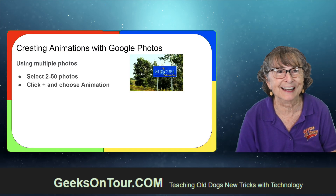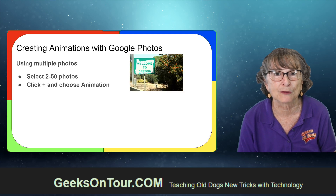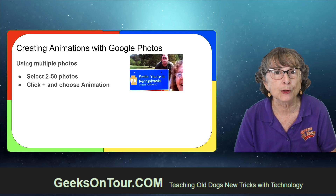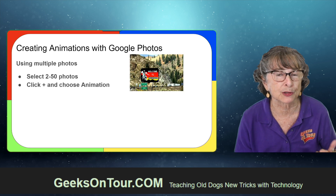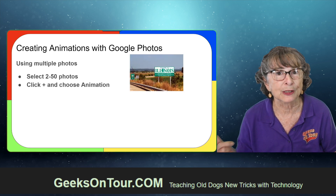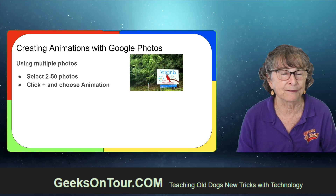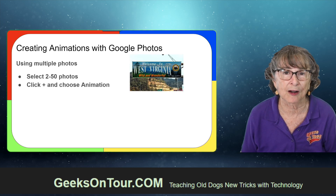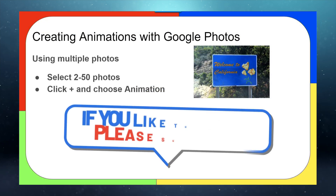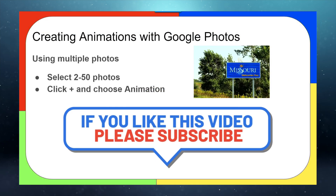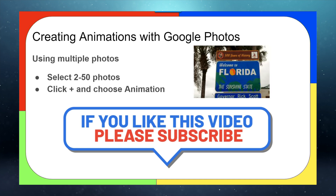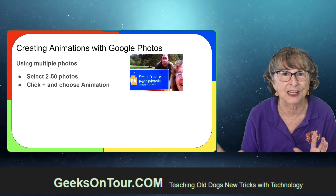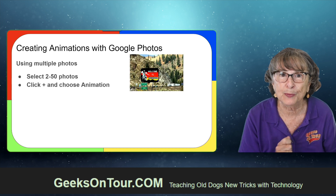So to review, creating animations with Google Photos there are two ways. Either using multiple photos - I only used two in that one, but you can go up to 50. For example, when we lived in an RV and traveled all over the country, we would always take a picture of the state sign. So I love having just this animation that goes through boom boom boom - all these state signs.